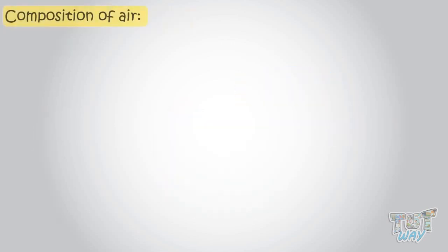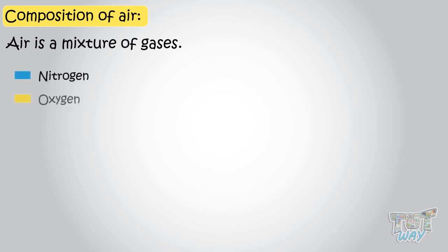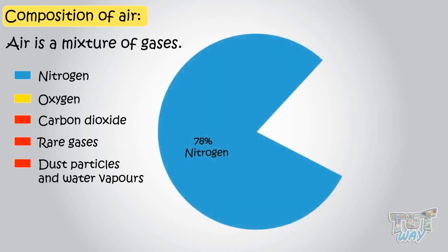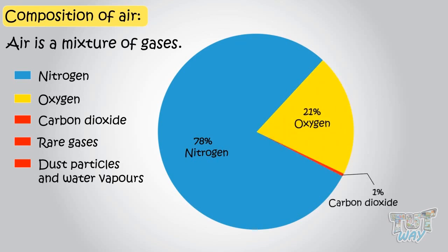Now let's see what air is made up of. Air is a mixture of gases: nitrogen, oxygen, carbon dioxide, some rare gases, dust particles, and water vapors. 78% is nitrogen, 21% is oxygen, and 1% includes carbon dioxide, some rare gases, water vapors, and dust particles.